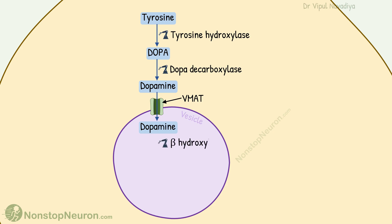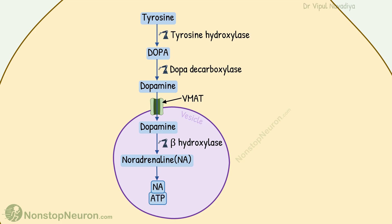Inside the vesicle, we have the beta-hydroxylase enzyme. It converts dopamine into noradrenaline. So we finally have noradrenaline, which is stored inside the vesicle in association with ATPs.